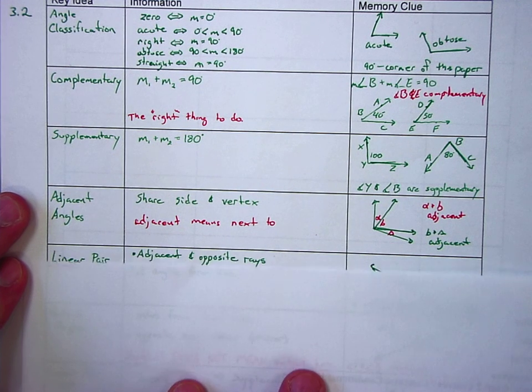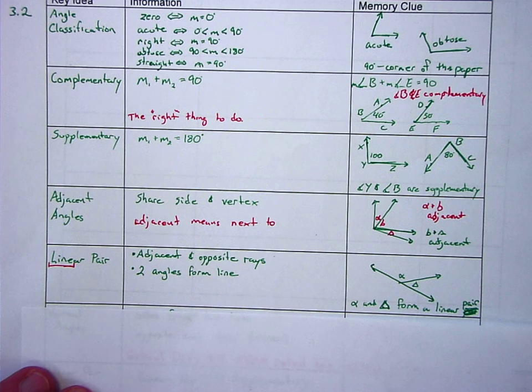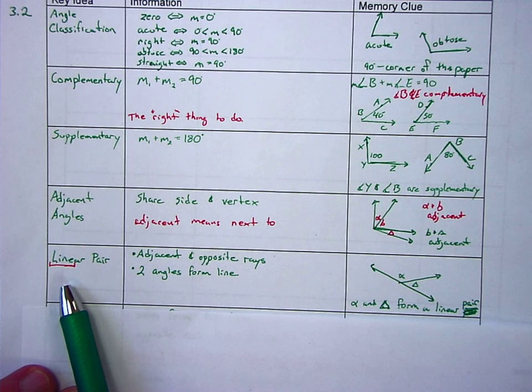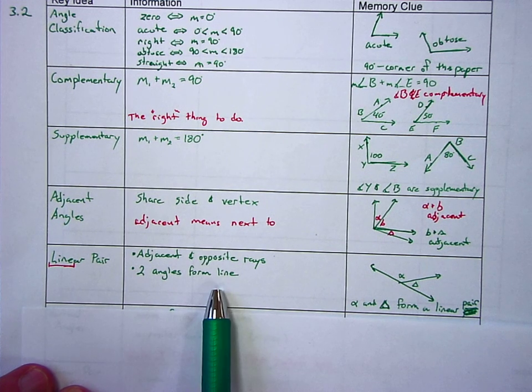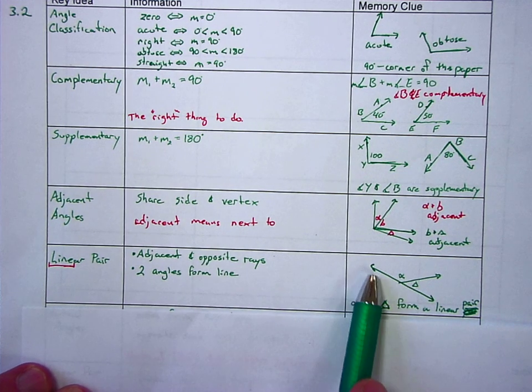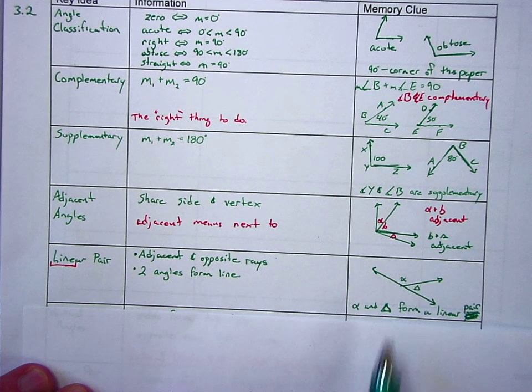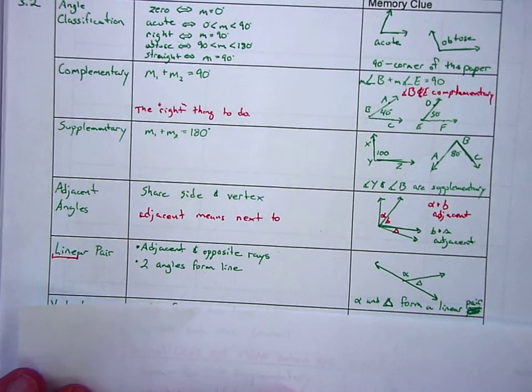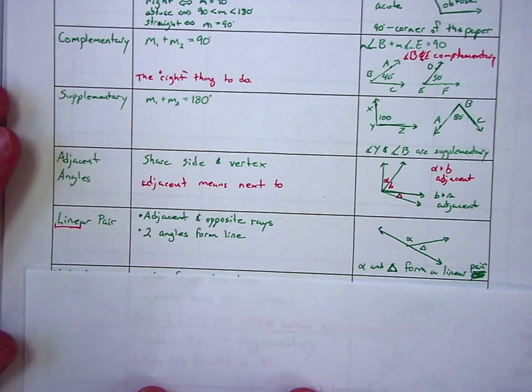Linear pair. Notice the word line is right in it. And a linear pair, well, it says adjacent plus an opposite ray in the book. But really, you're talking about two angles that when you put together, you have a line. So you start with a line, and then you have a ray that shoots off of it. So these two angles here form a linear pair. And notice the line that's right there.